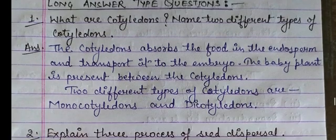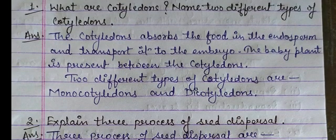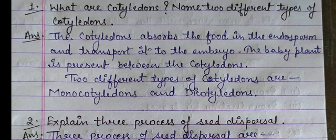The cotyledons absorb the food in the endosperm and transport it to the embryo. The baby plant is present between the cotyledons. Two different types of cotyledons are monocotyledons and dicotyledons. Cotyledons provide food to the plants — which includes sunlight, water, and minerals.